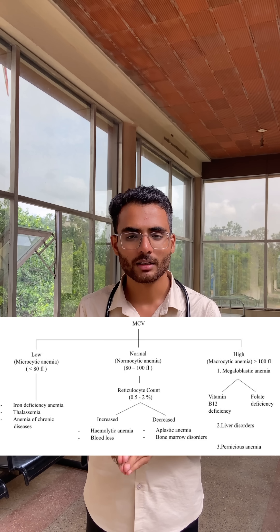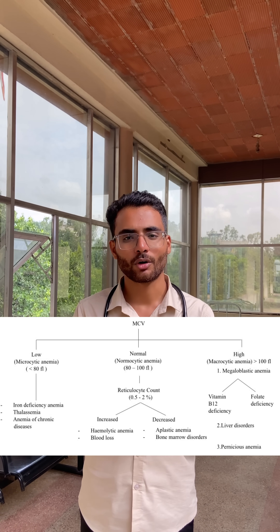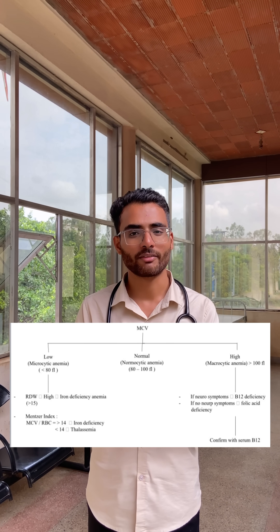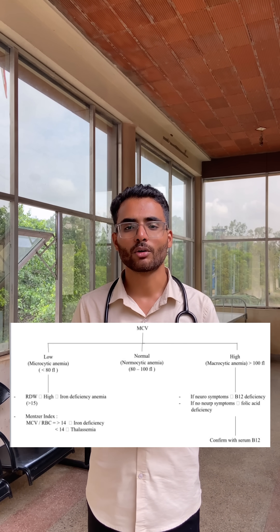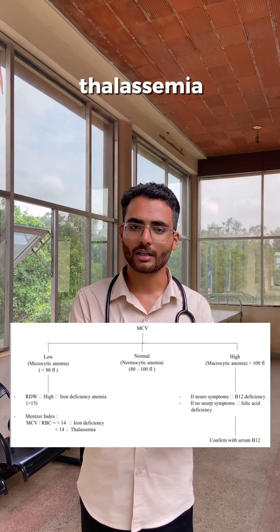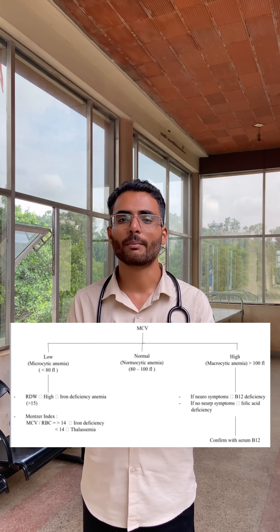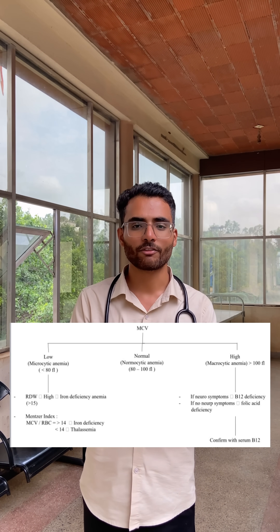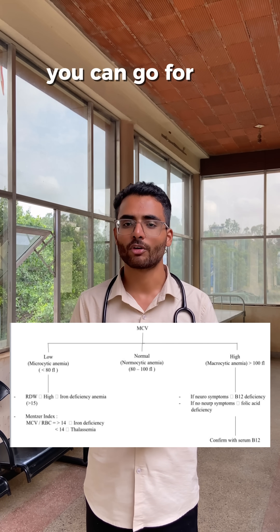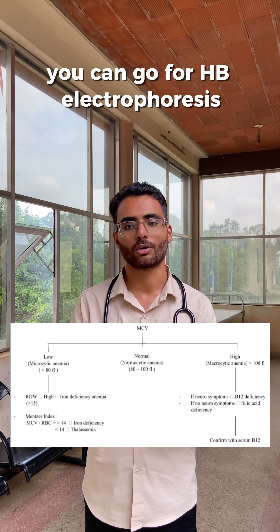Step 3: if the MCV is low, it can be due to iron deficiency anemia, thalassemia, or anemia of chronic disease. First, rule out any chronic disease. Iron deficiency anemia usually presents with koilonychia and angular stomatitis, and the RDW will be more than 15 — confirm with an iron profile. Thalassemia is seen in a younger age group, and the Mentzer index (MCV divided by RBC) will be less than 14 — confirm with hemoglobin electrophoresis.